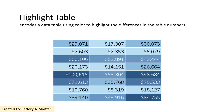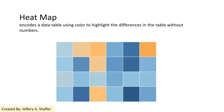We also have the highlight table, which gives a table background colors. We can use colors to highlight the differences in values within the table. If we remove those numbers, we convert that into a heat map, which can also be used to highlight differences in a table without using numbers.